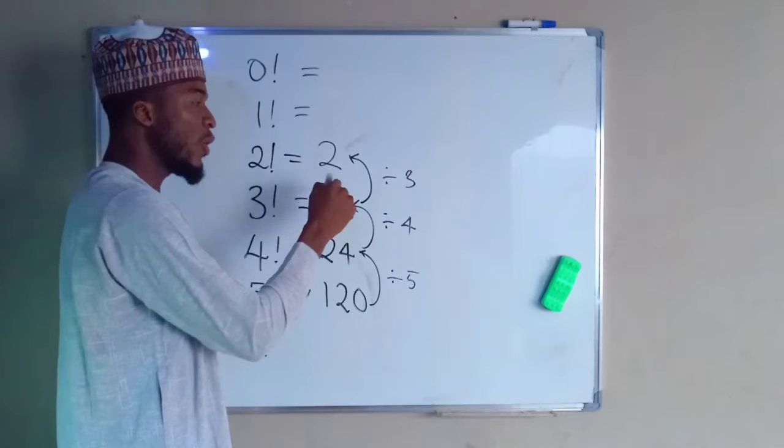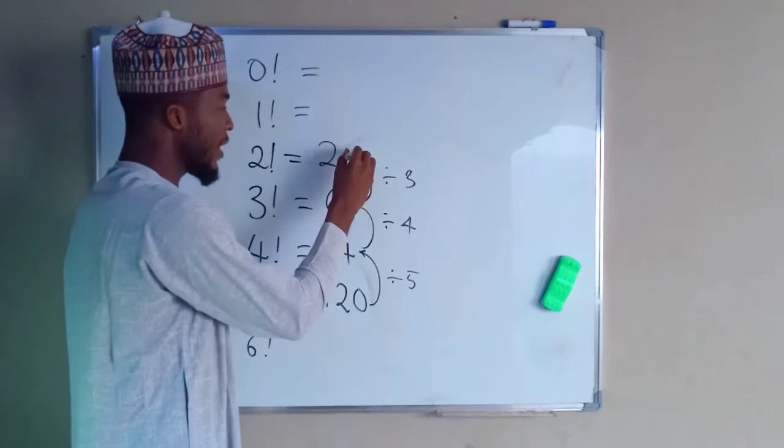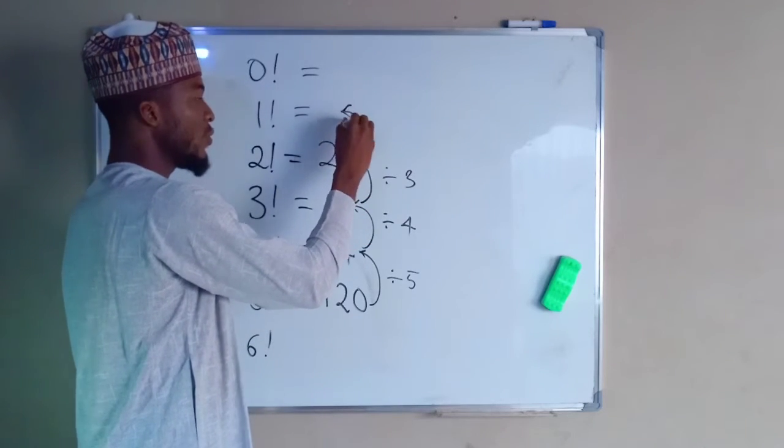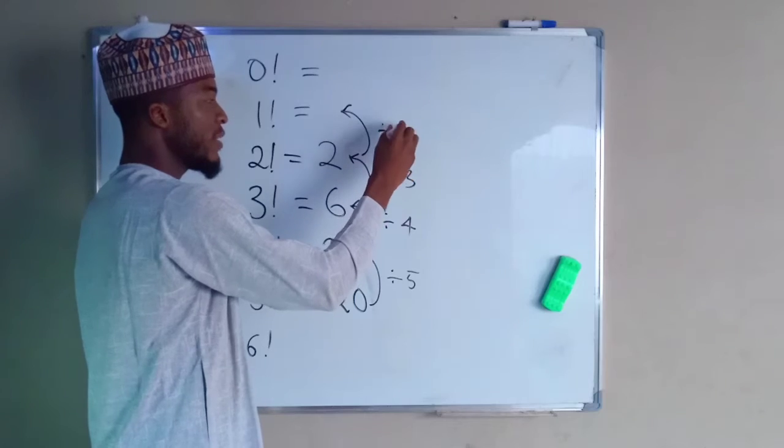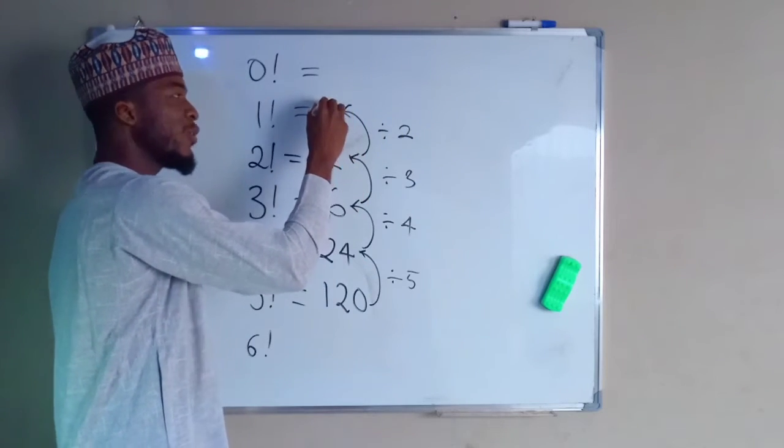So what about 1 factorial? You have to divide this 2 by 2 again. If you divide this number by 2, you are definitely going to obtain 1.